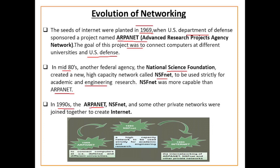In the 1990s, ARPANET, NSFNet, and some other private networks were joined together to create the internet. These networks collaborated, made amendments, and evolved into the internet. So first ARPANET was created, then NSFNet, and later in the 1990s, ARPANET, NSFNet, and other private networks collaborated and joined together to create the internet.